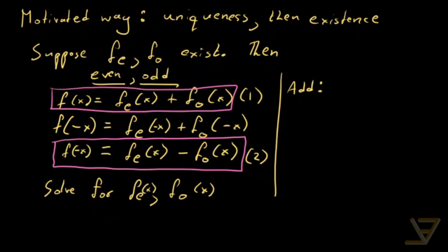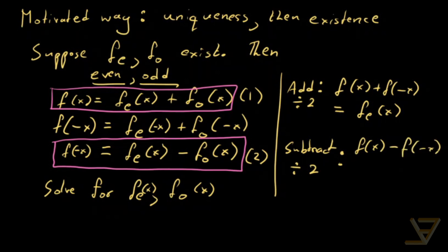So if we add them, f of x plus f of negative x is equal to f_e of x. And if we subtract them and divide both sides by two, then we get f of x minus f of negative x is equal to f_o of x.